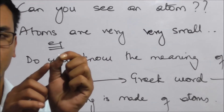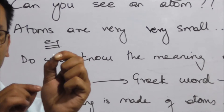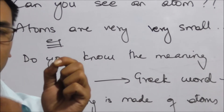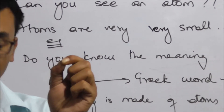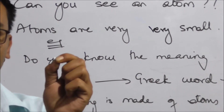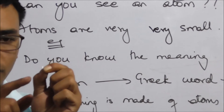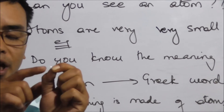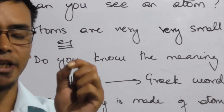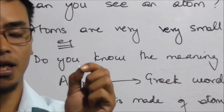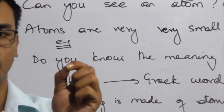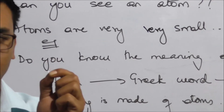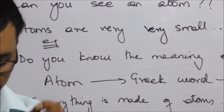Atoms — for example, carbon has an atomic number of 6.